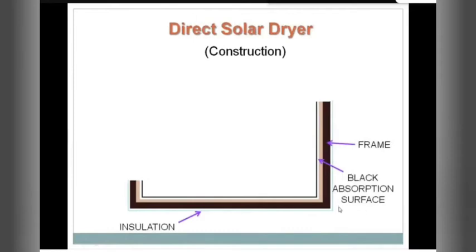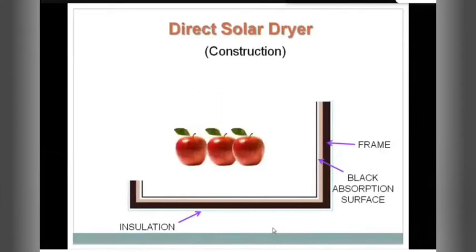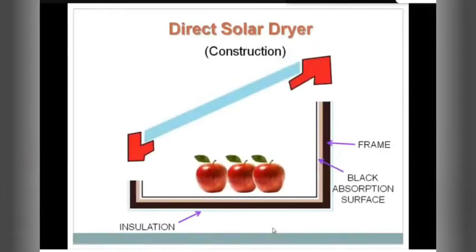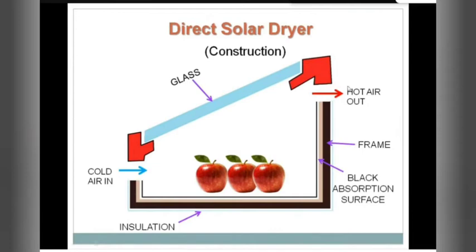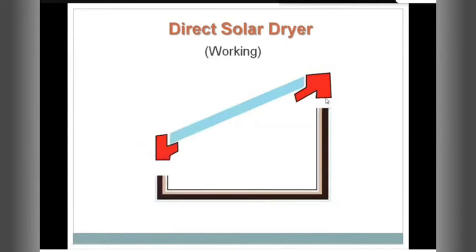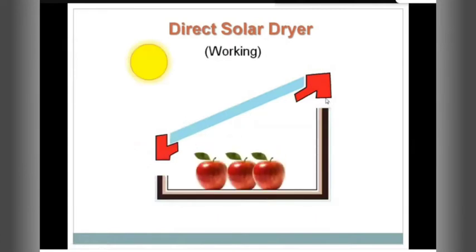This is the construction of a direct solar dryer. You have a frame — painted black on the internal side because black is a good absorbent of heat, and on the outer side it has insulation so heat may not get lost to the external environment. Inside you put your apples, and above this is a glass slab. There are two holes: one for the inlet of cold air and one for the exit of hot air.